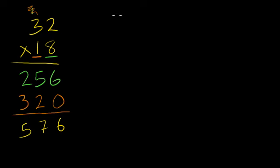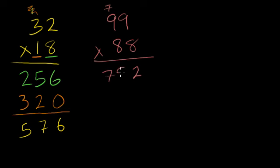Let's do 99 times 88. It's going to give us a big number. 8 times 9 is 72. Stick the 7 up there. 8 times 9 again is 72, but now you have the 7 up here. So 72 plus 7 is 79.